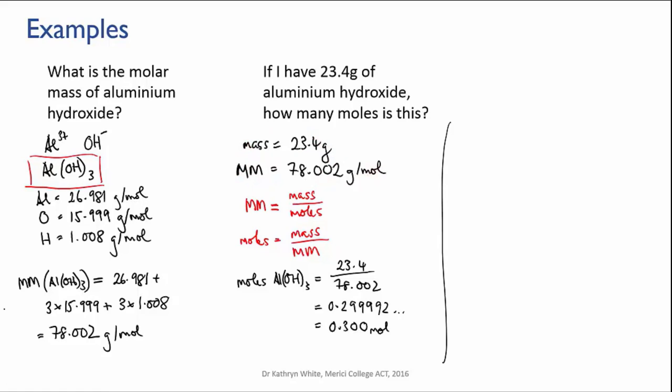But I'm going to set it out a bit like a unit conversion. So first of all, I will put down what I know as a fraction: 23.4 grams over one, and the conversion factor is my molar mass in grams per mole. But I have a mass that's in grams and I want to cancel out those grams and turn it into moles.